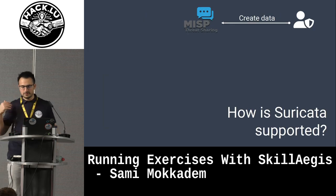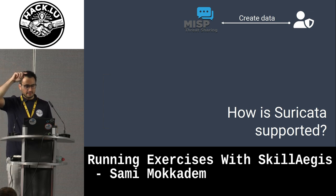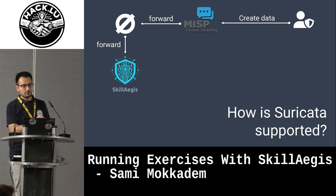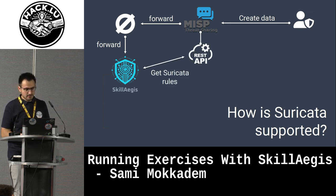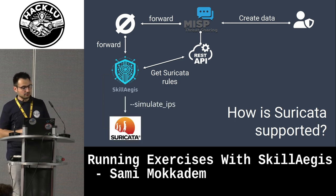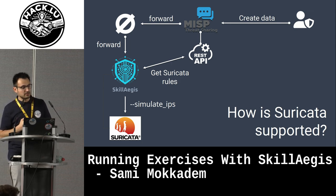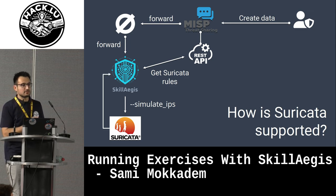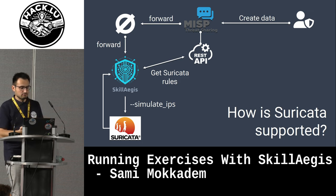When we integrated Suricata, here is how it works: when a user creates data in MISP, MISP forwards that information through ZeroMQ to Skill Edges. Skill Edges, through the MISP API, gets all the data that was encoded, exports it as Suricata rules, and then runs it on the Suricata system using the simulate IPS flag. Based on that, it gets what would have been blocked. Suricata then reports back to Skill Edges, which validates whether the player actually created a rule that blocked malicious traffic.